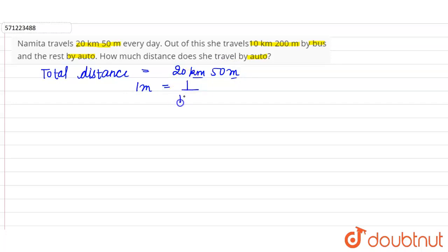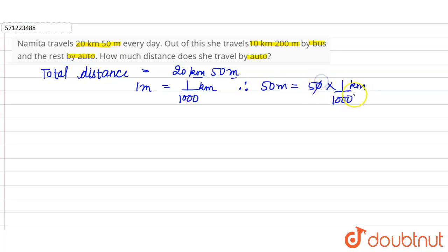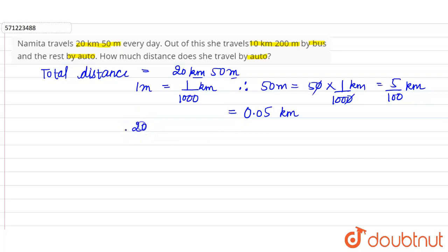We know 1 meter is equal to 1/1000 kilometers. Therefore, 50 meters will be equal to 50 × (1/1000) kilometers. One zero cancels, giving 5/100 kilometers. Since there are two zeros in the denominator, we point the decimal two places before 5, giving 0.05 kilometers. So total distance is 20 km + 0.05 km = 20.05 kilometers.